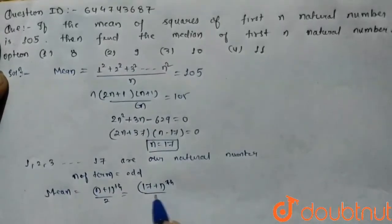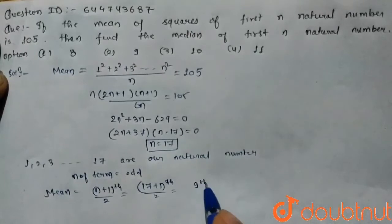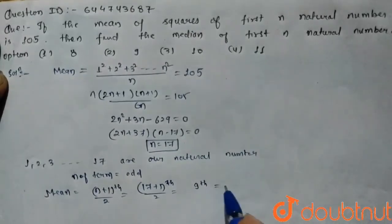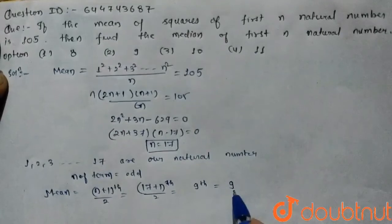So the 9th term of the given series is 9. Hence 9 is our median. So option 2 is correct.